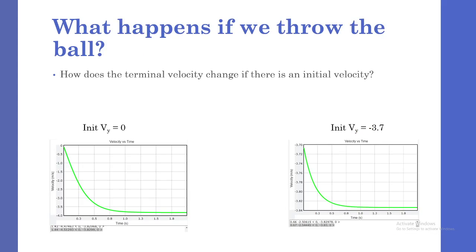Now, to wrap things up, let's consider the scenario of throwing the ball downwards instead of releasing it from rest. Specifically, let's look at how does the terminal velocity change when we start with a non-zero initial velocity. To test this, I simply change the y-coordinate of the initial velocity in my code, which gave me the two figures here.